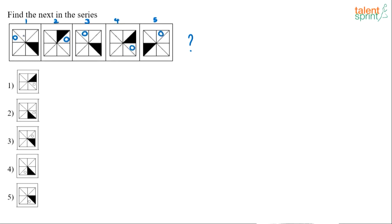From 1 to 2, the circle came into this box — it moved 3 positions clockwise. It jumped into this box, moving 3 sections clockwise. Now from 2 to 3 what happened? It was here and it came back here — it went 2 positions anti-clockwise. So from 1 to 2 it moved 3 positions clockwise, and from 2 to 3 it moved 2 positions anti-clockwise.